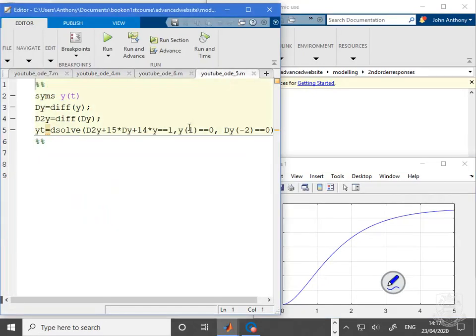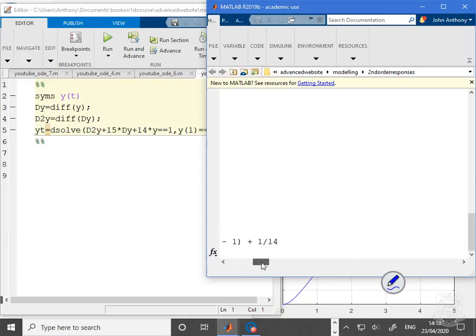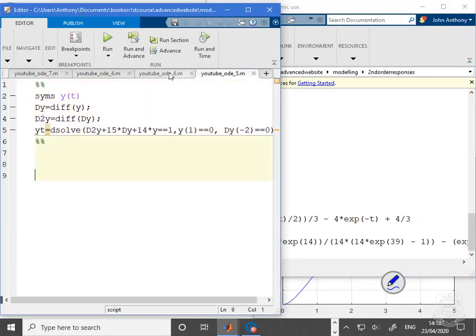So if we now look at Example 5, so this was the second example we looked at. You'll see we've got syms y(t), Dy = diff(y), D2y = diff(Dy), and there's exactly the equation we'd written down in the notes. Run that, and here you can see MATLAB has thrown out the solution. This one's a bit longer, covering a bit more of the page, but it's thrown out the solution for you.